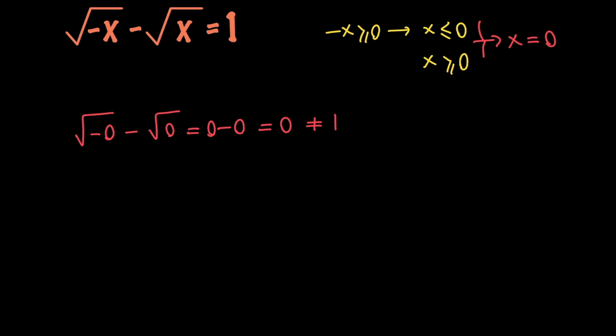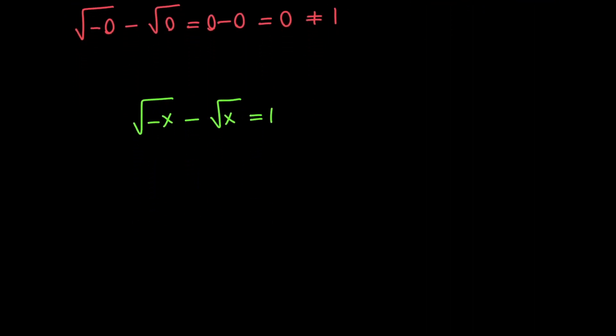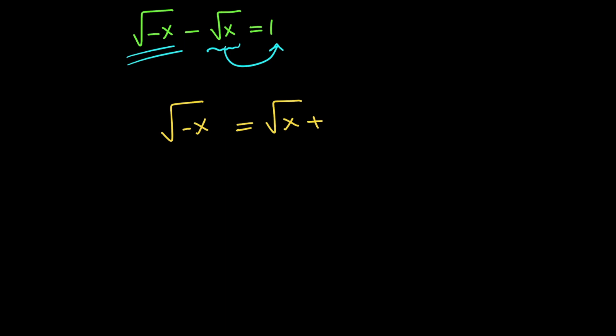In order to solve our equation, I'm going to use two methods. In the first method, I'm going to solve the equation as I solve any other radical equation. Whenever we have a radical equation with two square roots, we move one of them to the other side and then square both sides to get rid of one of the square roots. So let's go ahead and move this one to the right-hand side and isolate this one. We will have the square root of negative x equals the square root of x plus 1.